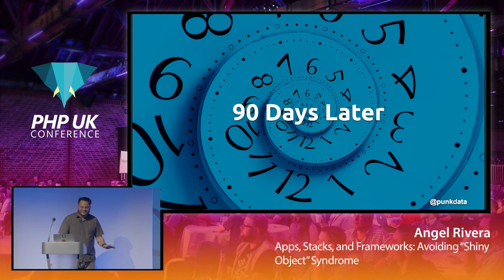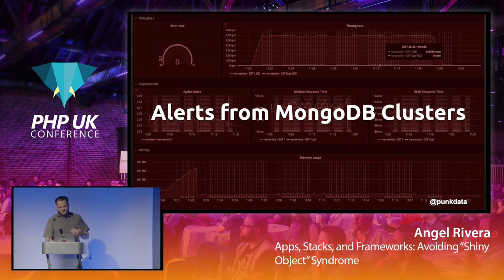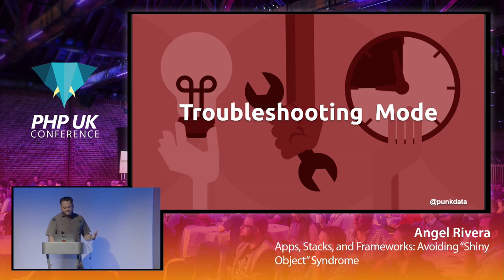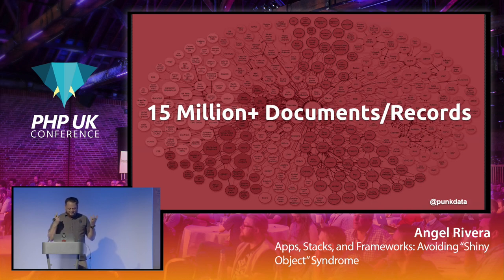Until 90 days later — bum bum bum — MongoDB starts kicking over. Clusters are failing, our Nagios is just blowing up with alerts everywhere. We're seeing high disk thrashing, memory peaked, CPUs peaked — just a disaster. Services are failing, customers are calling saying, 'I'm timing out, nothing's happening.' Like I said, we were a good team. We went into troubleshoot mode — put our hats on, started looking at logs and all the details. We quickly figured out what was going on.